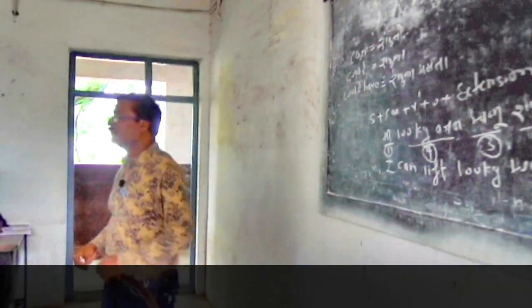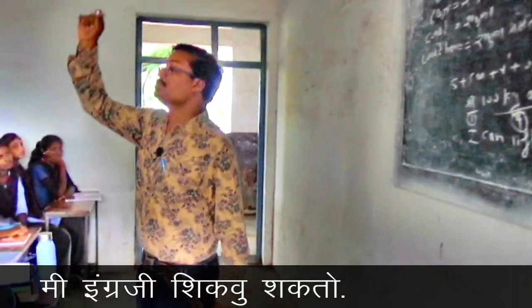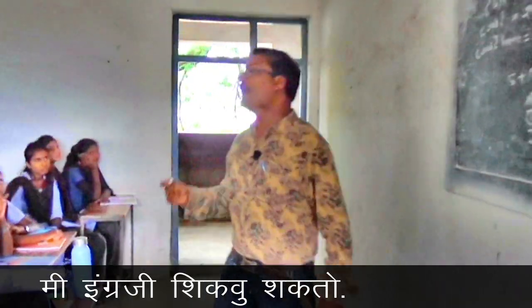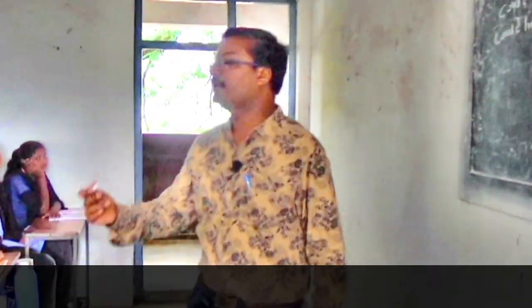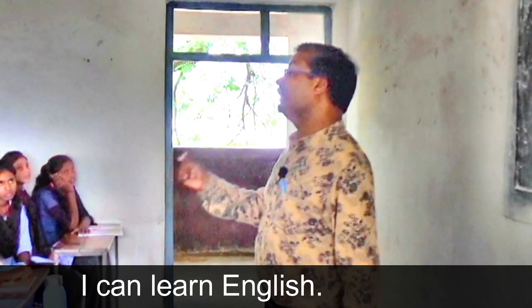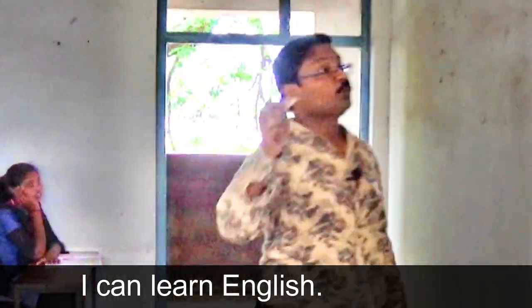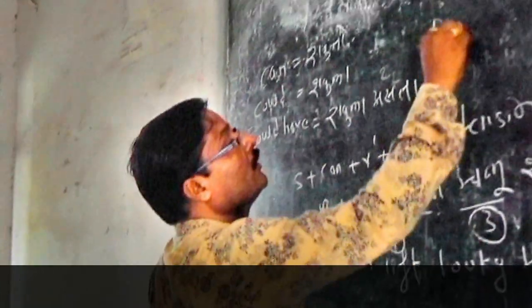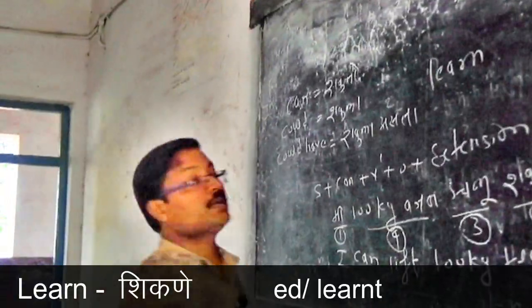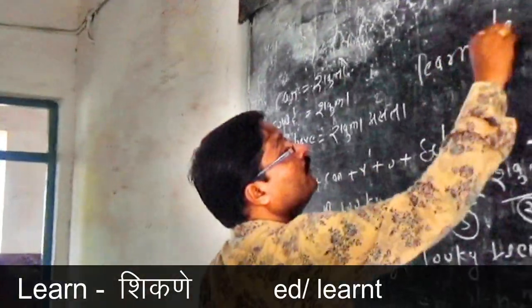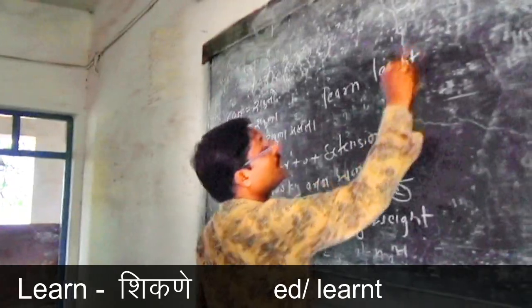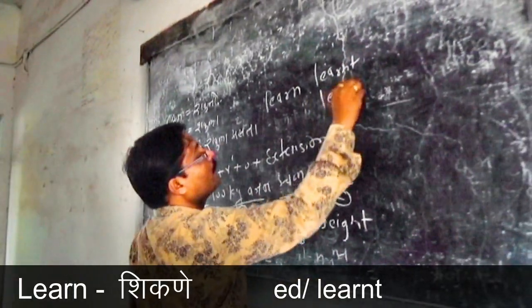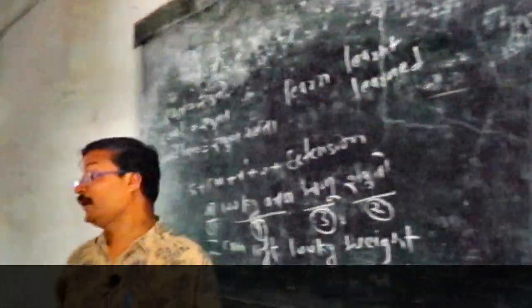Any sentence you take — 'Mi ingraji shikku shakto': Mi means I, shakto means can, shikne means learn. So: I can learn English. Provided that you should know the word 'learn'. Second form: learned or learnt. Third form: learned or learnt. You have to know this word.